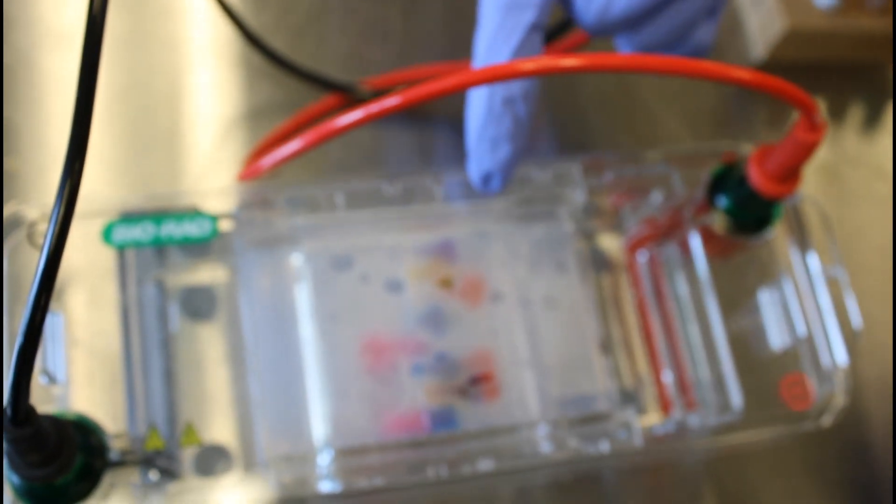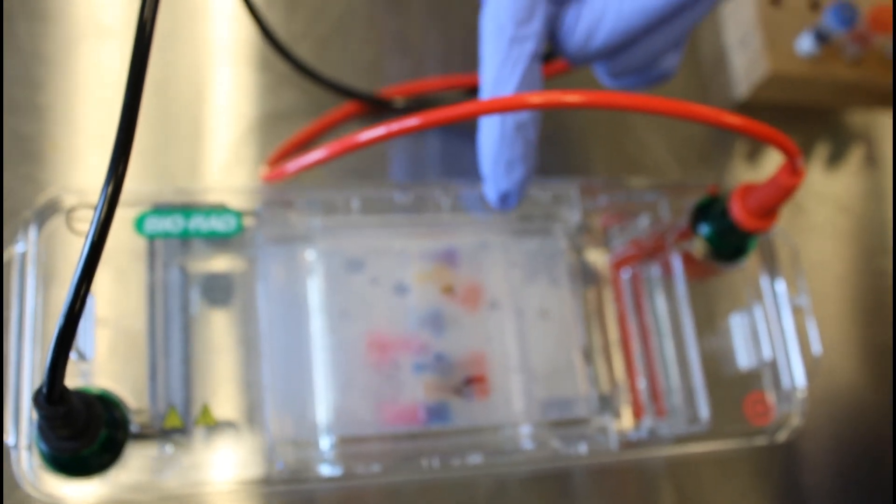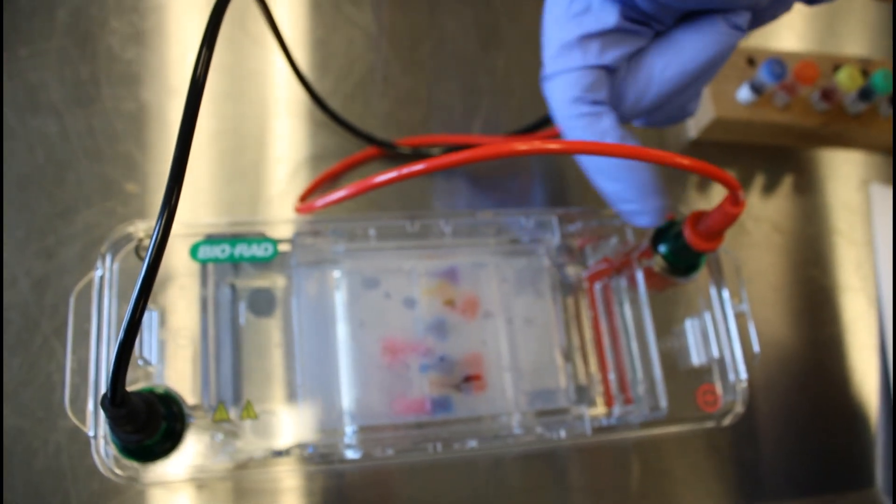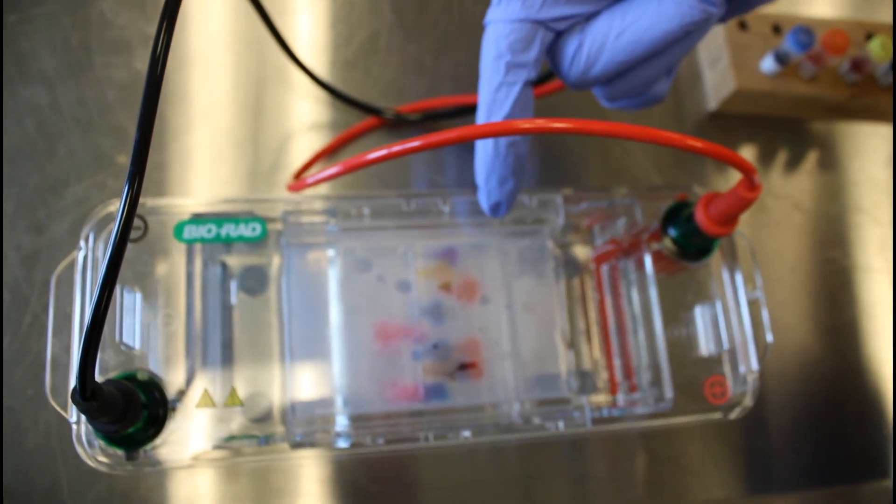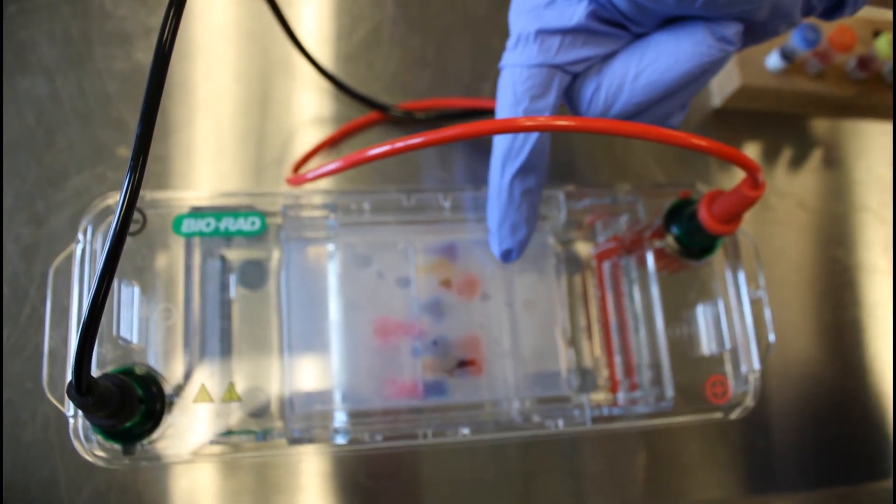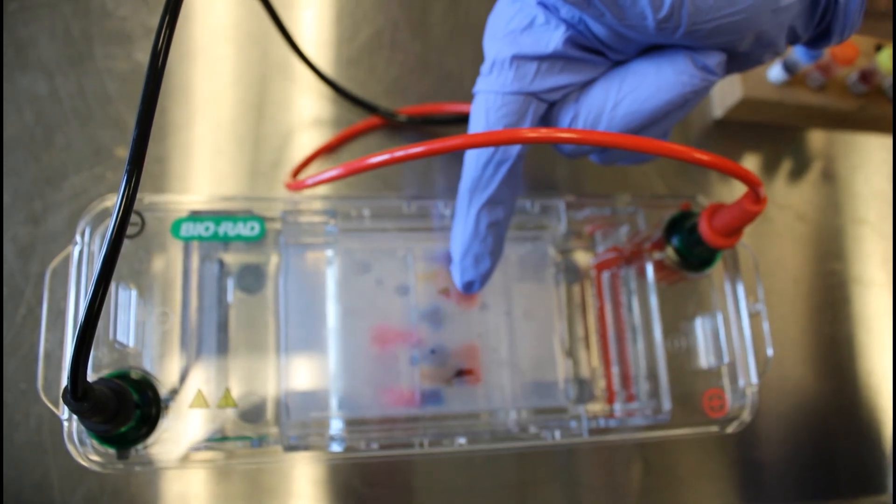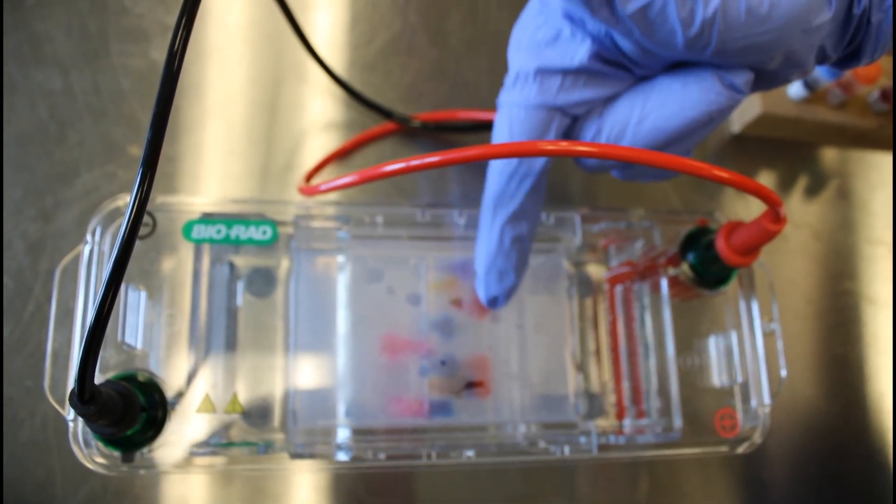Okay, so it's been about 15 minutes. We're going to let this run for 30 total, so we're about halfway through. We're still applying the 100 volts of electricity through the buffer and through the gel. And as you can see, we have some movement of the dyes. So this BB dye is getting pulled towards the positive electrode, as is the methyl orange, and the PG, and the xylene, the XC.